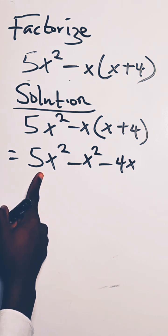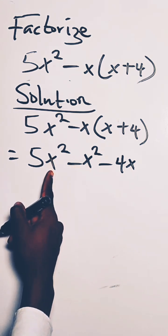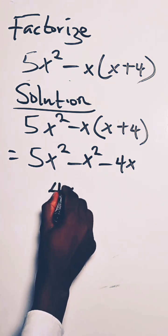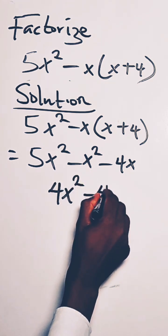So here we have 5x squared, we have x squared, so you see that saying 5x squared minus 1x squared, that is 4x squared minus 4x.